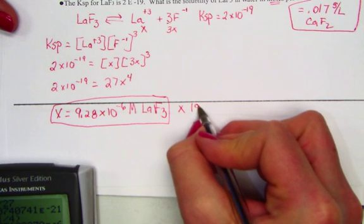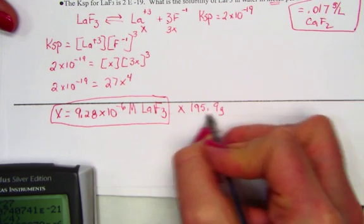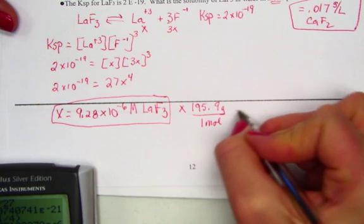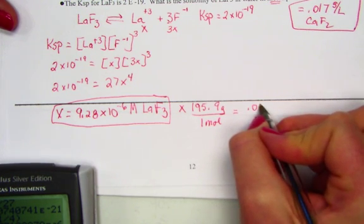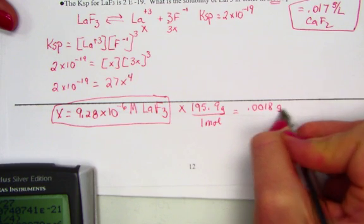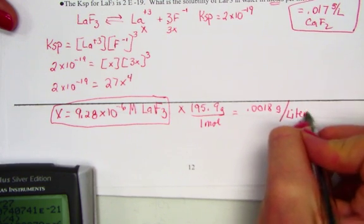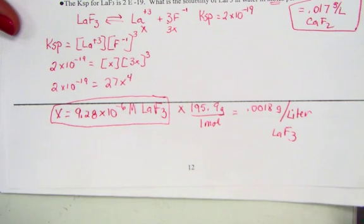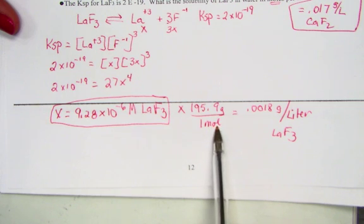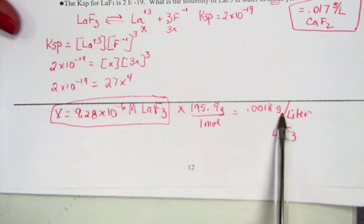The molar mass value of 195.9. And we come up with a quite small number that we had anticipated, 0.0018 grams per liter of LaF3. I'm only showing that to just review if it asks for grams per liter. It's just an additional step where we use molar mass to convert moles into grams.